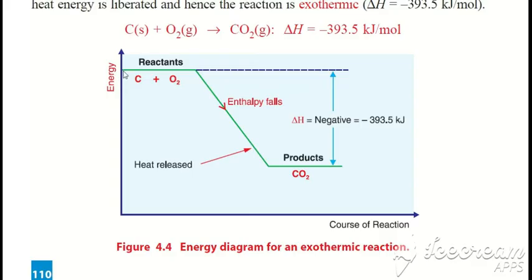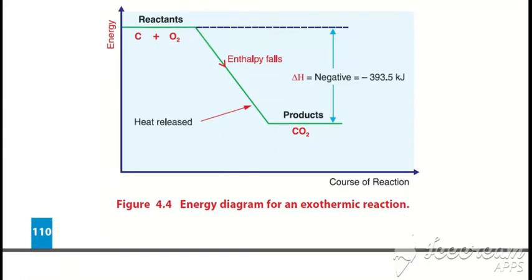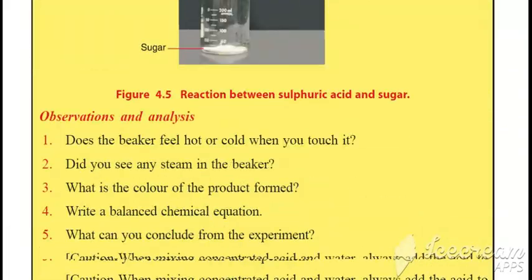The change in enthalpy is negative. The reactants have higher heat energy level than the products. Carbon and oxygen at higher energy level release heat to form carbon dioxide at lower energy. This is an exothermic reaction diagram.